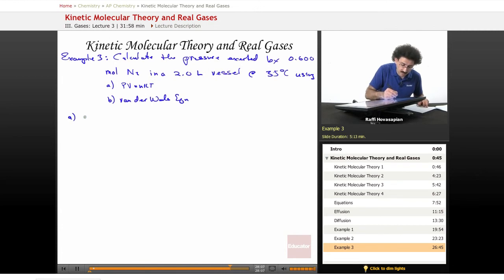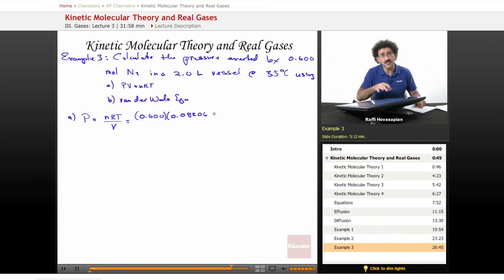So A, PV equals nRT. We rearrange, we get nRT over V, and we just plug the values in. We get 0.600 is our number of moles, R is 0.08206, and remember, when you're dealing with the ideal gas law, you have to use the 0.08206 for R.